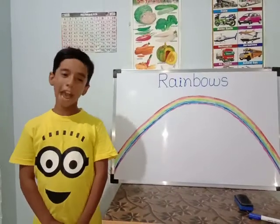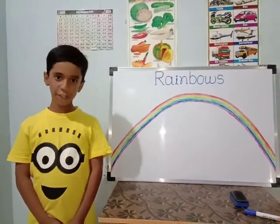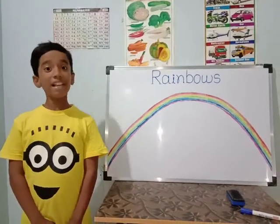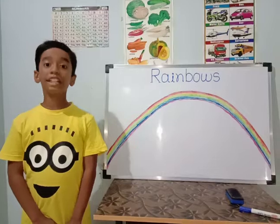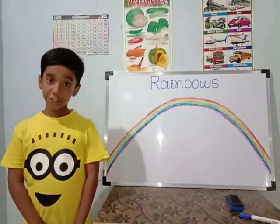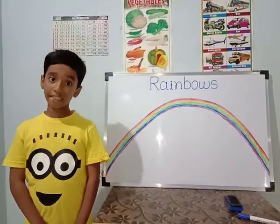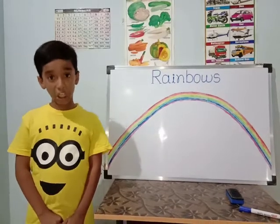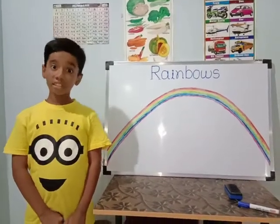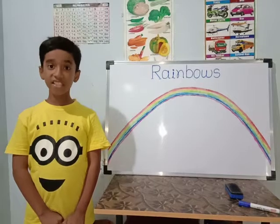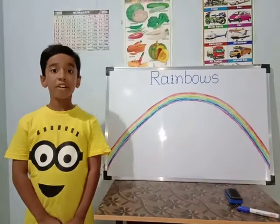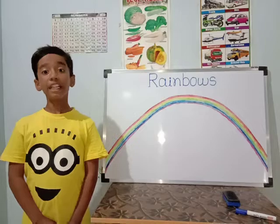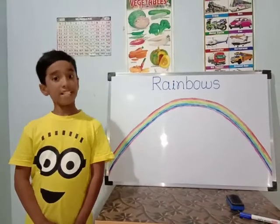At the starting, I will tell you the definition of rainbows. We usually see light as white, but it is actually a mixture of different colors. We know this because we can see the colors in the rainbow. When the sun shines low in the sky behind you and it is raining in front of you, you may see a rainbow.